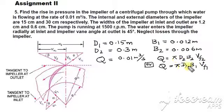And here the breadth and diameters are given, discharge is available, and of course you can find out VF1 and VF2 from this for radial flow.